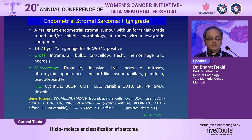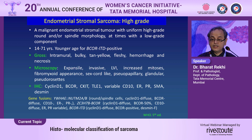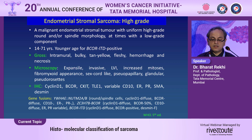High-grade endometrial stromal sarcomas have more mitosis and round-to-spindle cell morphology, and can be associated with low-grade areas, reflecting the heterogeneity within this spectrum. The age range is wide, and certain genetic subtypes such as BCOR ITDs (internal tandem duplications) occur in relatively younger patients. Grossly, in contrast to low-grade, these tumors are more fleshy, large-sized, with hemorrhage and necrosis. Microscopically, they are expansile, more invasive, with increased LVI, increased mitosis, and variable fibromyxoid appearance. They can also have sex cord-like features and pseudoglandular rosettes, which may raise the differential of a round-cell tumor including Ewing sarcoma.